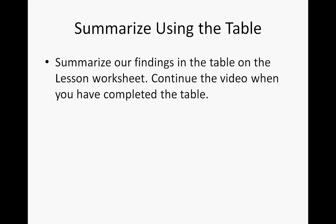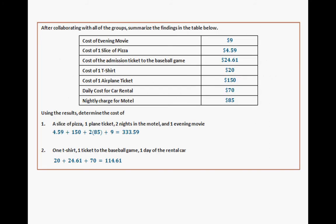We're going to summarize our findings in the table on the lesson worksheet. Continue the video when you've completed the table. Your table should look like this — after collaborating with all groups, summarize the findings: cost of an evening movie, one slice of pizza, cost of admission to a baseball game, cost of a T-shirt, cost of an airplane ticket, the daily cost of car rental is $70, and the nightly charge for the motel is $85. Using all these results, the cost of a slice of pizza, a plane ticket, two nights in a motel, and one evening movie totals $333.59. And one T-shirt, one baseball game ticket, and one car rental totals $114.61.